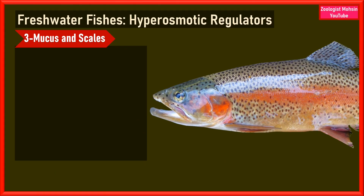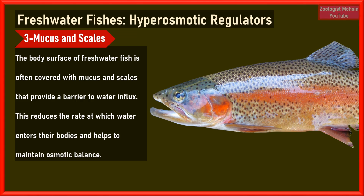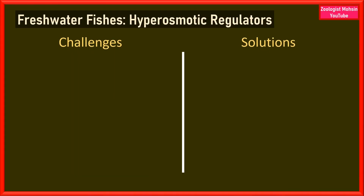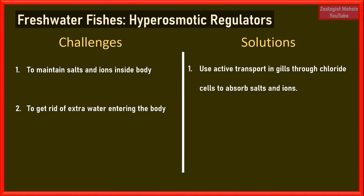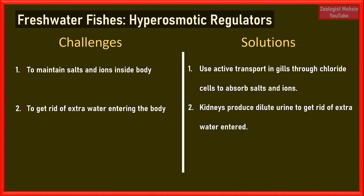The third strategy is mucus and scales, which surround the fish body. The body surface of freshwater fish is often covered with mucus and scales that provide a barrier to water influx, reducing the rate at which water enters their bodies and helping to maintain osmotic balance. In summary, freshwater fishes use active transport in gills through chloride cells to absorb salts, and their kidneys produce dilute urine to eliminate excess water.